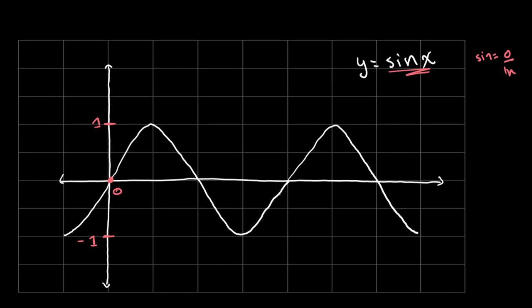The maximum point where y equals 1 is at 90 degrees. Then by the shape of the graph, this here is 180 degrees, this here is 270 degrees, this is 360 degrees, this is 450 degrees, and then this will be 540 degrees.